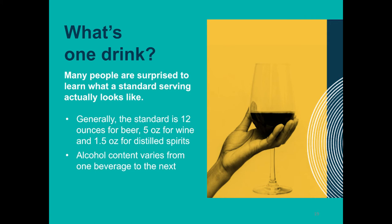One of the most important things to know when drinking alcohol is what a standard serving of alcohol is. Many people are actually surprised to learn what actually counts as one drink. In general, it's 12 ounces of beer, 5 ounces of wine, or 1.5 ounces of distilled spirits like vodka, whiskey, and tequila. However, different types of beer, wine, and liquor can have varying amounts of alcohol content, and this is why it's important to know how much alcohol your specific drink contains. This can be especially an issue at parties when someone else is serving the drinks and you don't get to pour your own.